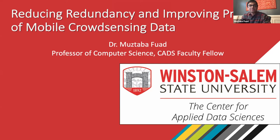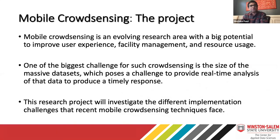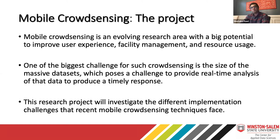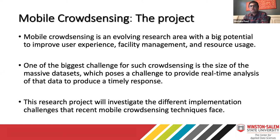I'm going to give you a quick introduction to what I'm doing as part of the center over the next three years. Crowdsensing is a research area roughly 20 years old, started when we invented sensors that can connect to the internet and talk to each other. After the invention of mobile devices, this area evolved a lot. Right now, at any moment, we each carry on average between 7 to 11 sensors at any given time — that's a lot of data collected from our cell phones.